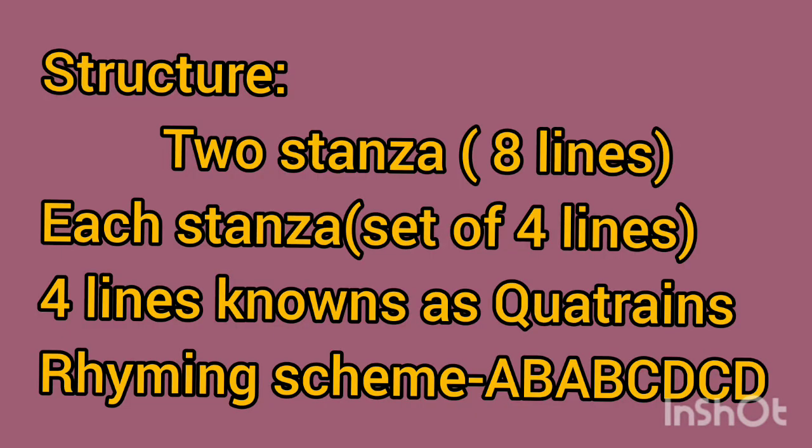Structure of the poem: The poem 'The Crocodile' has two stanzas, meaning eight lines in total. Each stanza has a set of four lines, known as quatrains. Its rhyming scheme is A-B-A-B C-D-C-D.